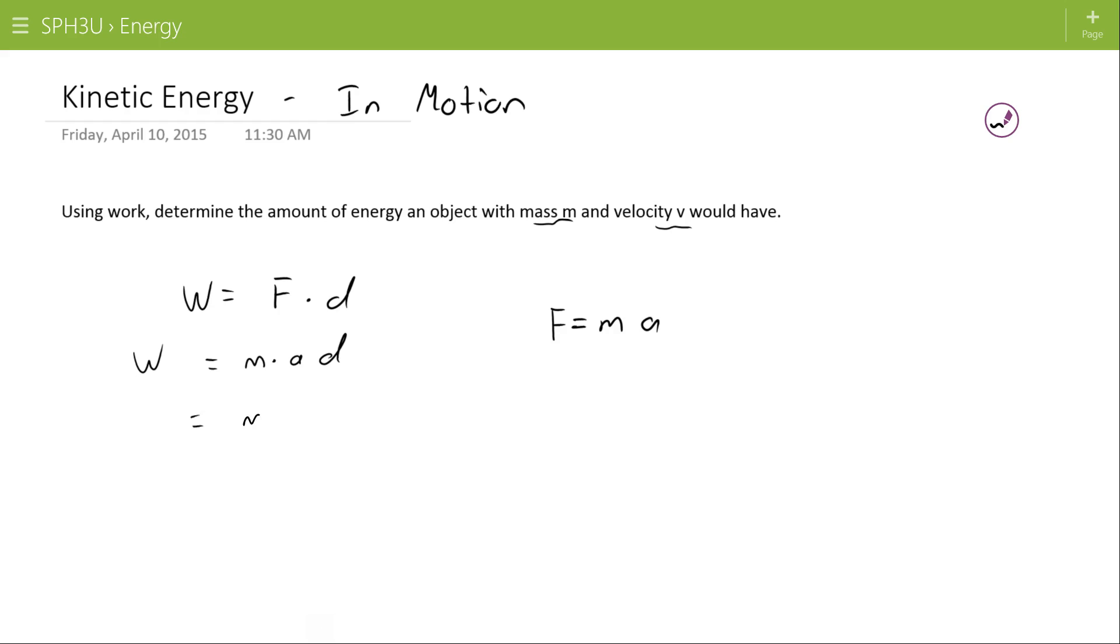Now leaving the mass out front, AD, this is similar to one of the five equations of motion that we were using way back in the first unit. Specifically, 2AD is equal to V2 squared minus V1 squared.